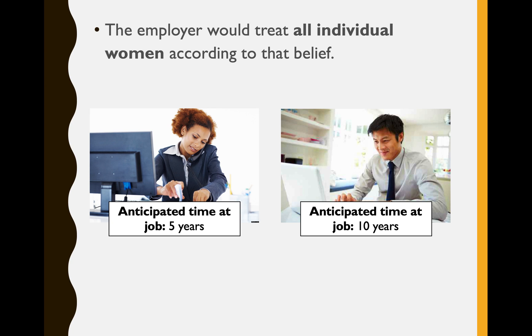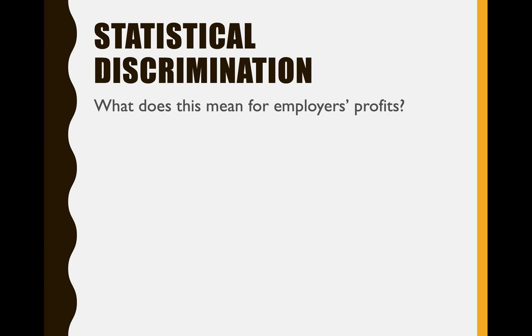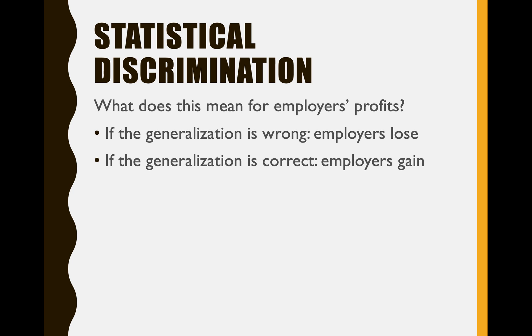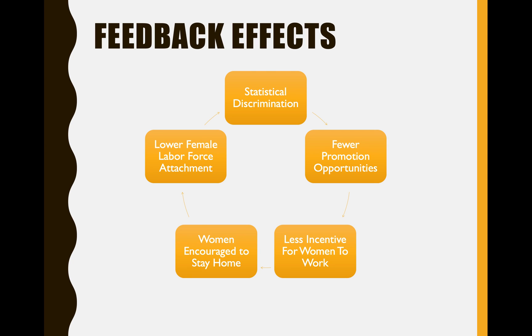The individual employer might treat all individual women according to that belief, despite the fact that we don't really know if this particular woman intends on only staying five years. What does this mean for employers' profits? Well, if the generalization is wrong, employers lose out on a great hire — you lost out on a woman that might have been a great employee. But the gains of the statistical discrimination might be pretty high: if the generalization is correct and you decide not to hire a woman because you think she will leave the labor force in a few years after having a child, then you avoided that outcome.